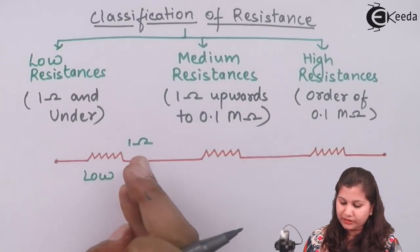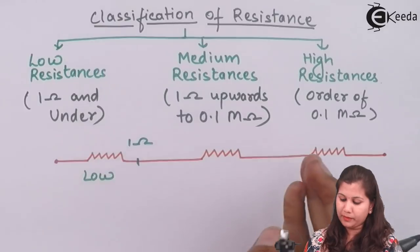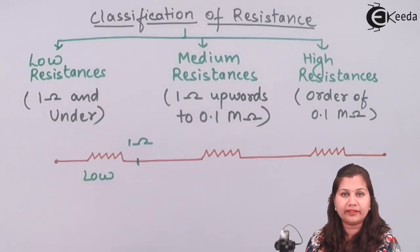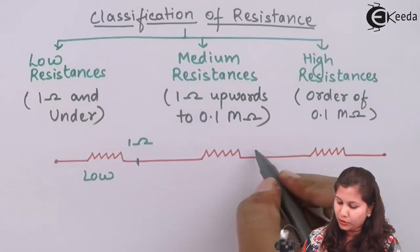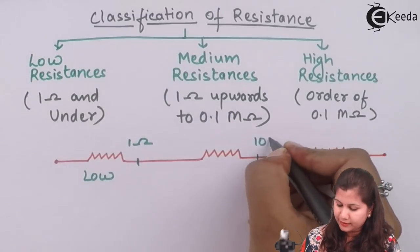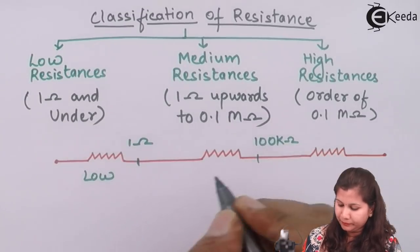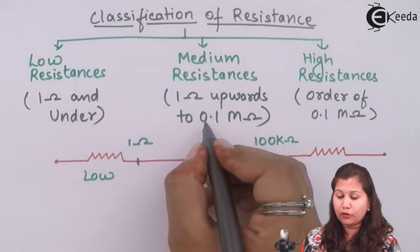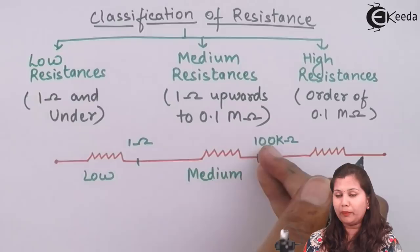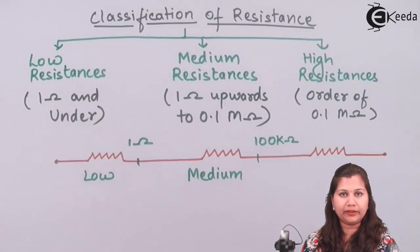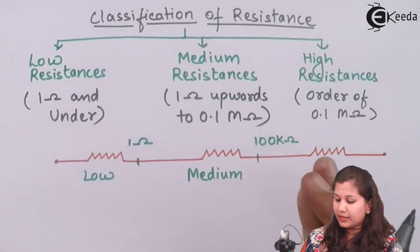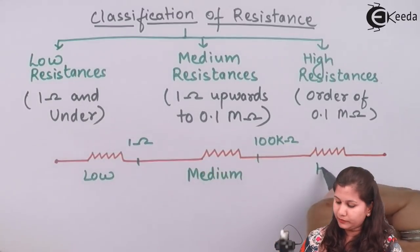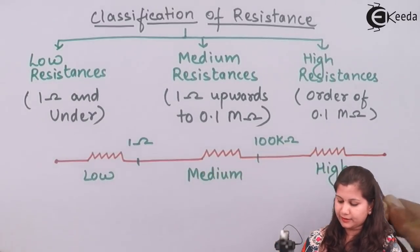Resistances having a value greater than one ohm but less than 0.1 mega ohm — which we can also say is 100 kilo ohms — are called medium resistances. Note that 0.1 mega ohm is equivalent to 100 kilo ohms. All resistances whose value is greater than 100 kilo ohms are called high resistances.